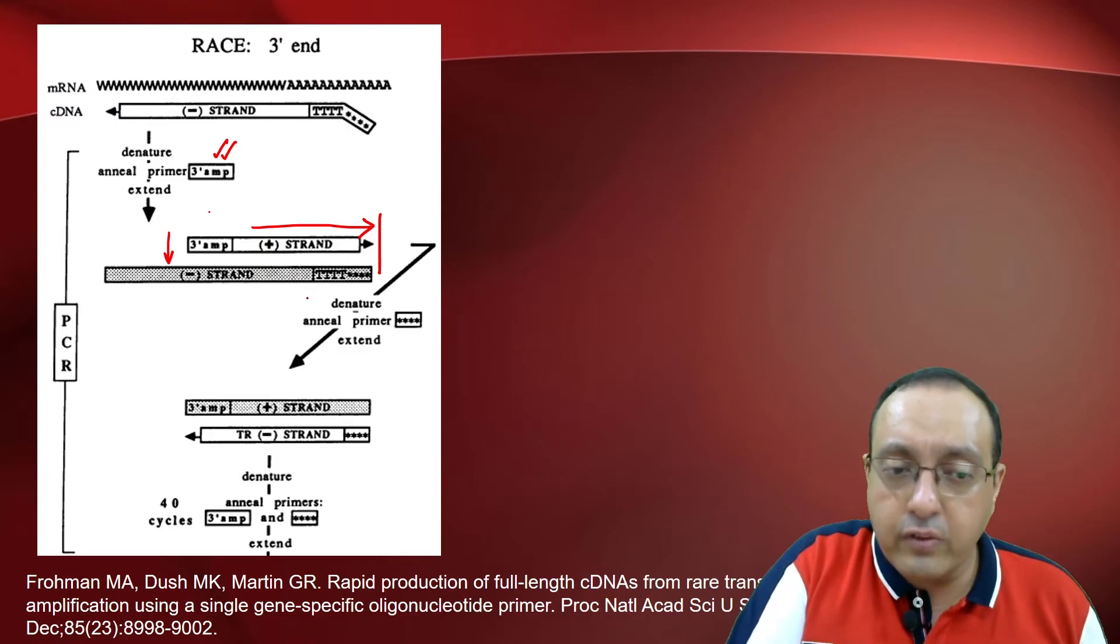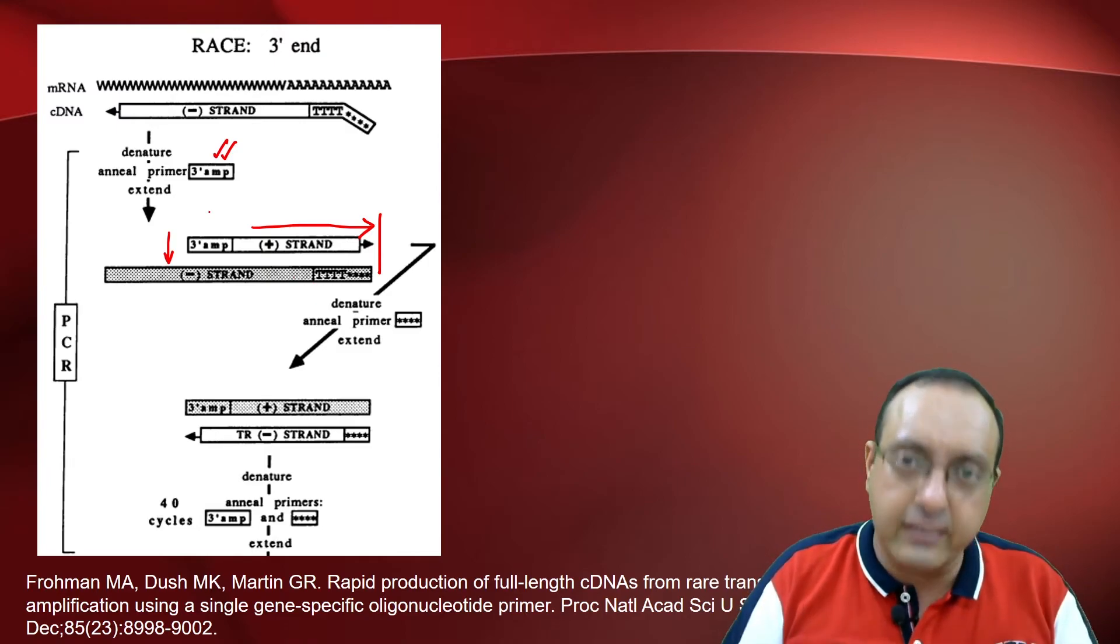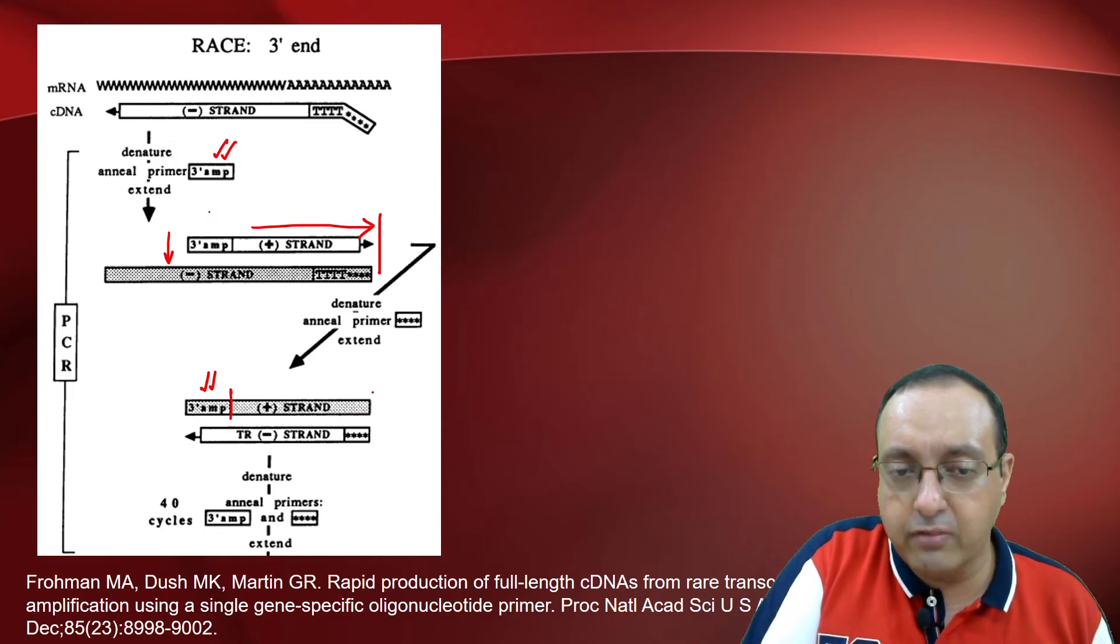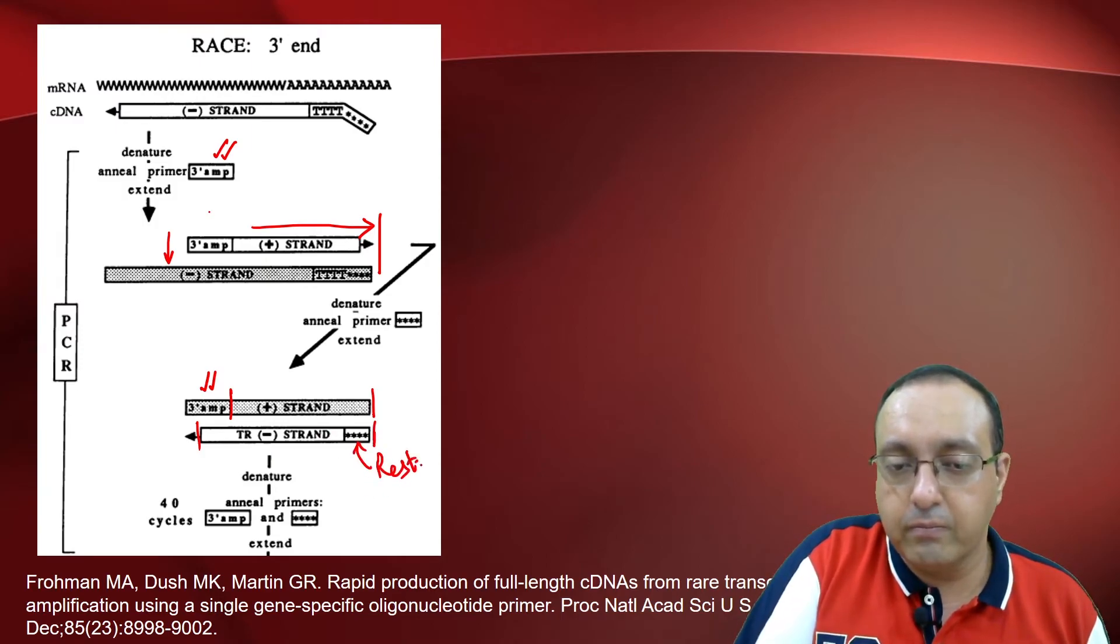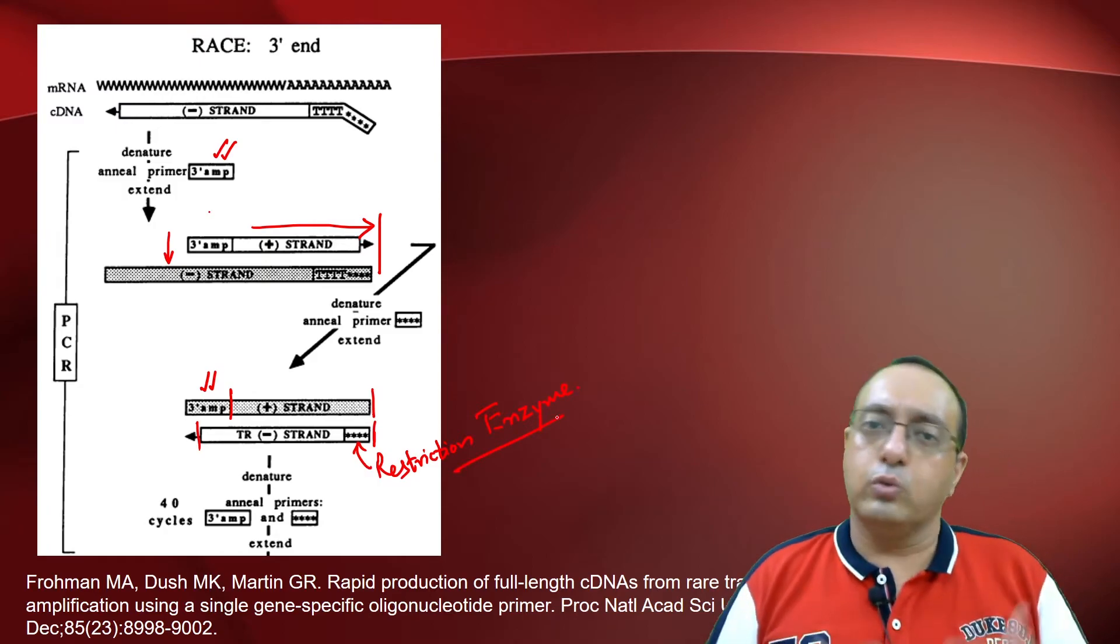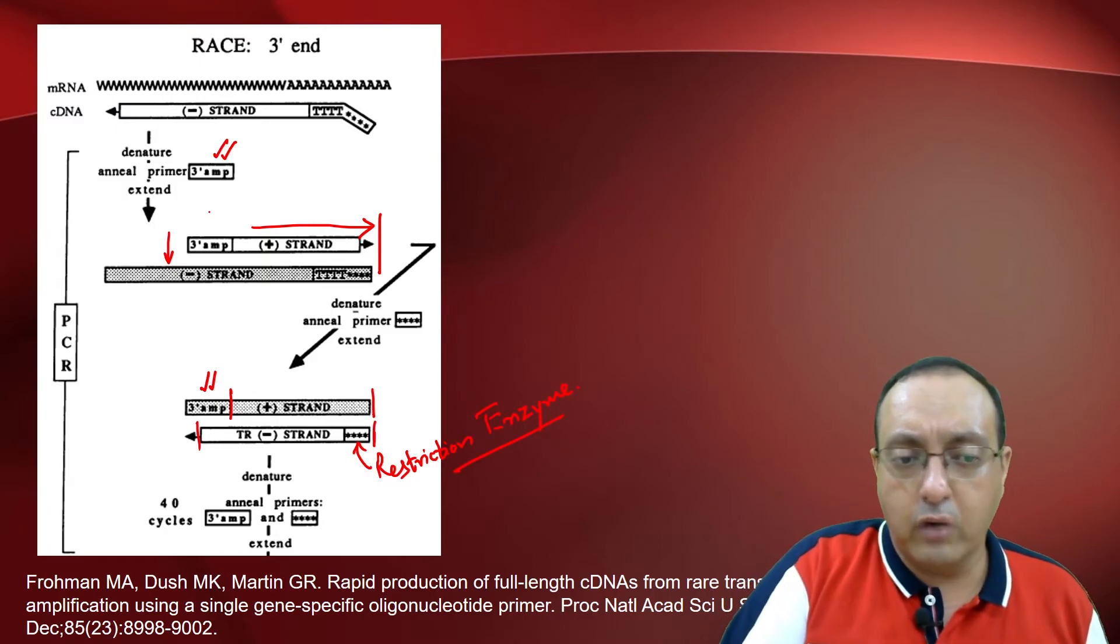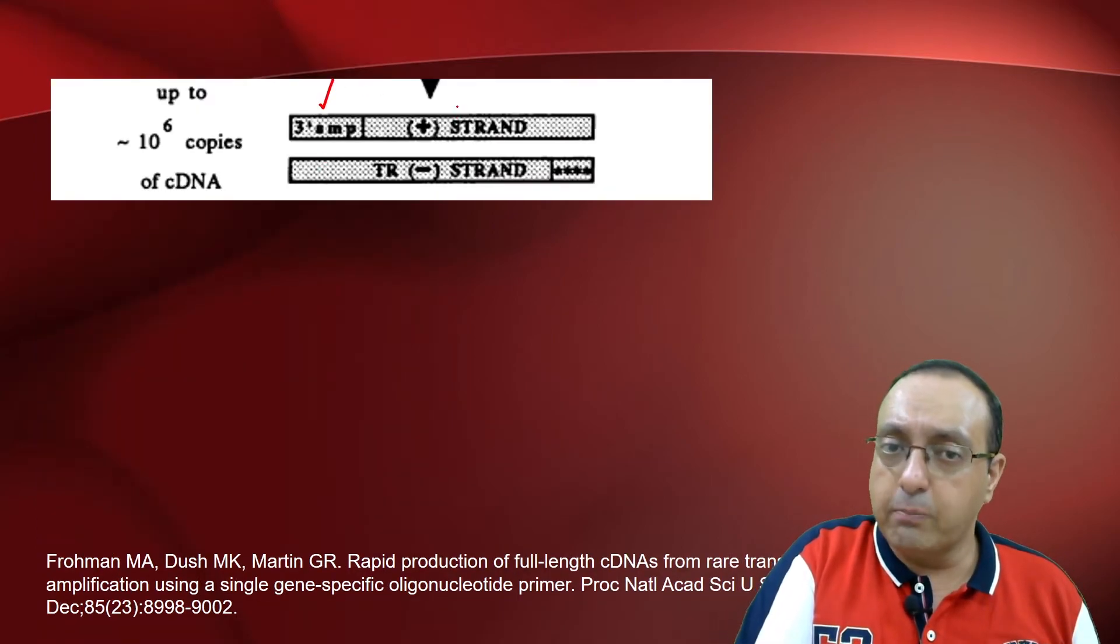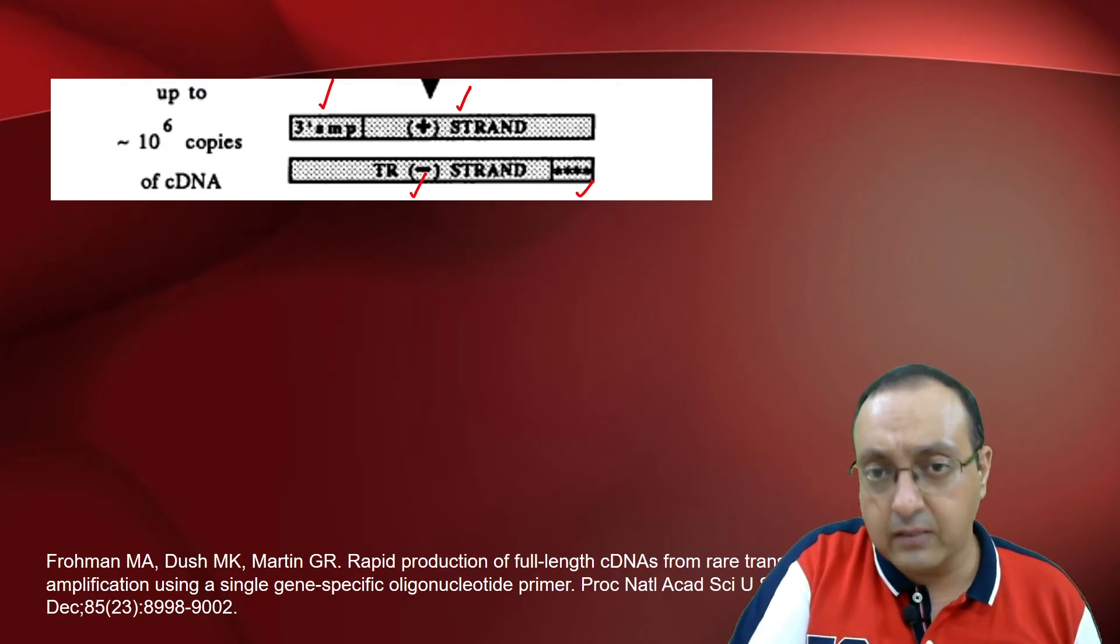So now what we will do is we will again make truncated DNA. This truncated DNA will have 3' primer information, the small plus strand information, and the truncated minus strand information along with the restriction enzyme. So this is the basic outlook and what we will end up with is this 3' primer along with the plus strand, minus strand, and the restriction site.